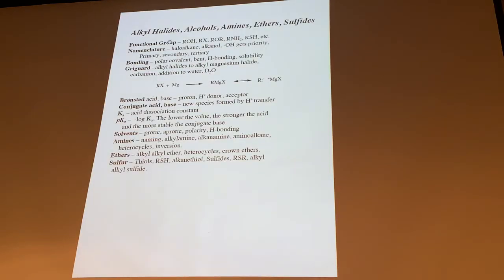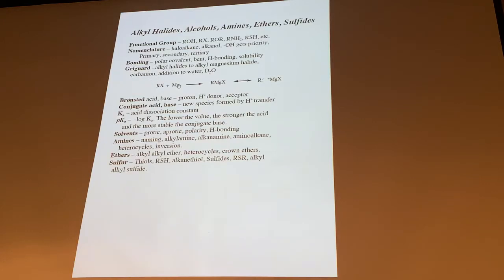We talked about equatorial, axial, and the chair being the most important. Halides, sulfides, alcohols, pKas, Grignard reactions, reagents — that's really 352, but it comes out of the alkyl halides. So it's an extension of that topic. Those are electrophilic to begin with, but with the magnesium we turn them into a nucleophilic carbanion species.